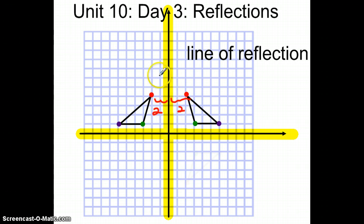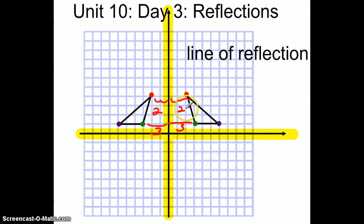Does that make sense for the green dots? Here's a pre-image dot and here is the image dot. The pre-image dot is one, two, three units away from the line of reflection. And the green image dot is also three units away from the line of reflection. So on every reflected image, when you compare the pre-image with the image, the pre-image point's distance from the line is the same as the image point's distance from the line of reflection. That's how you know things are truly reflected.